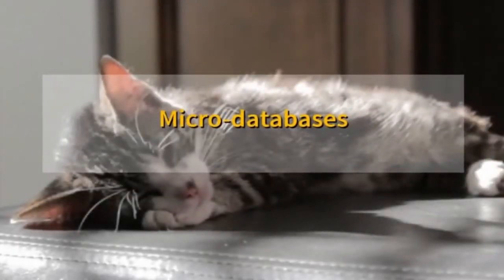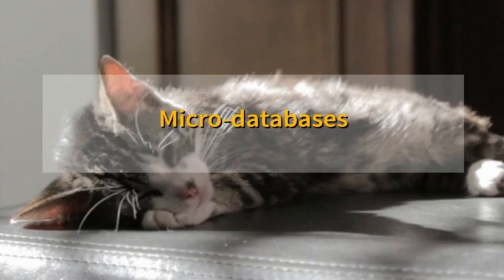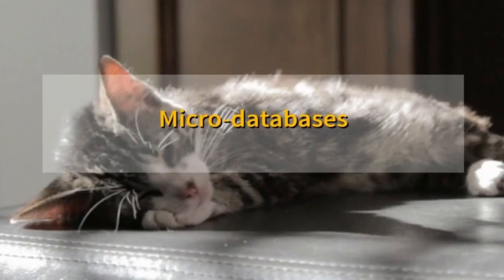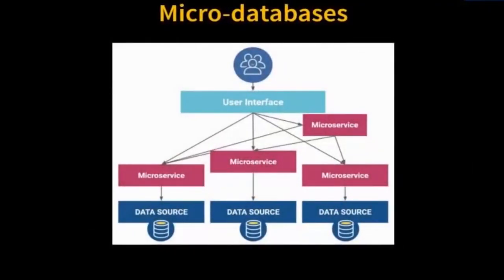When we have enough automation to automatically enroll our databases in authentication strategies and backup strategies, we can get to micro databases. A micro database is that database owned by a microservice. If a microservice is going to own its own data, it may have one or more micro databases, or it may have no micro databases. This microservice here doesn't do anything that requires storing state, so it doesn't have a micro database at all. But these services each have their micro databases.